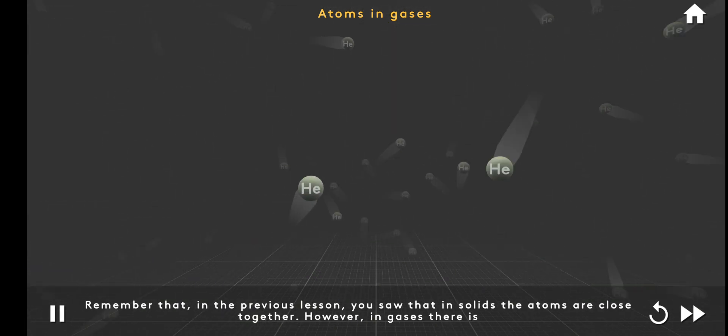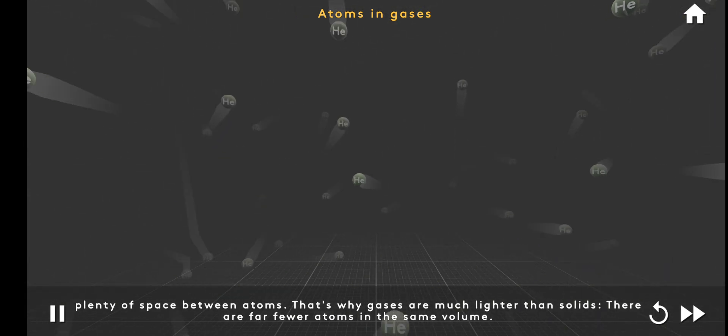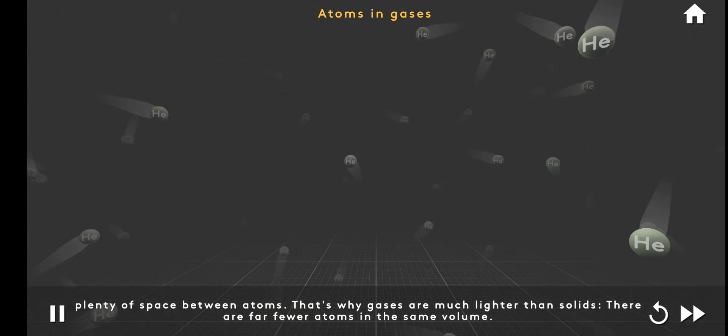Remember that in the previous lesson, you saw that in solids the atoms are close together. However, in gases, there is plenty of space between atoms. That's why gases are much lighter than solids. There are far fewer atoms in the same volume.